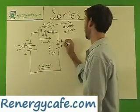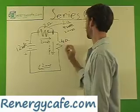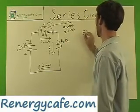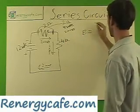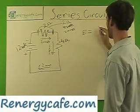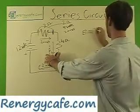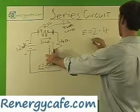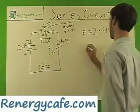You know that we have 4 ohms right here. E equals our 2 amps times 4 ohms. 2 times 4 is 8, so that gives us 8 volts.